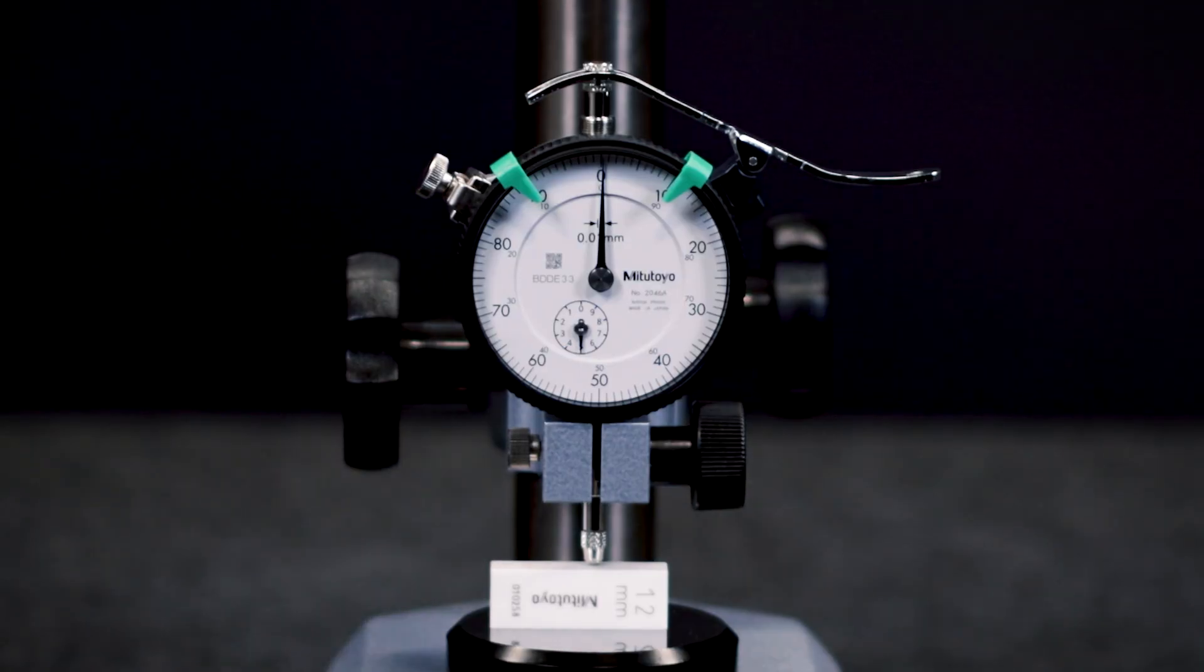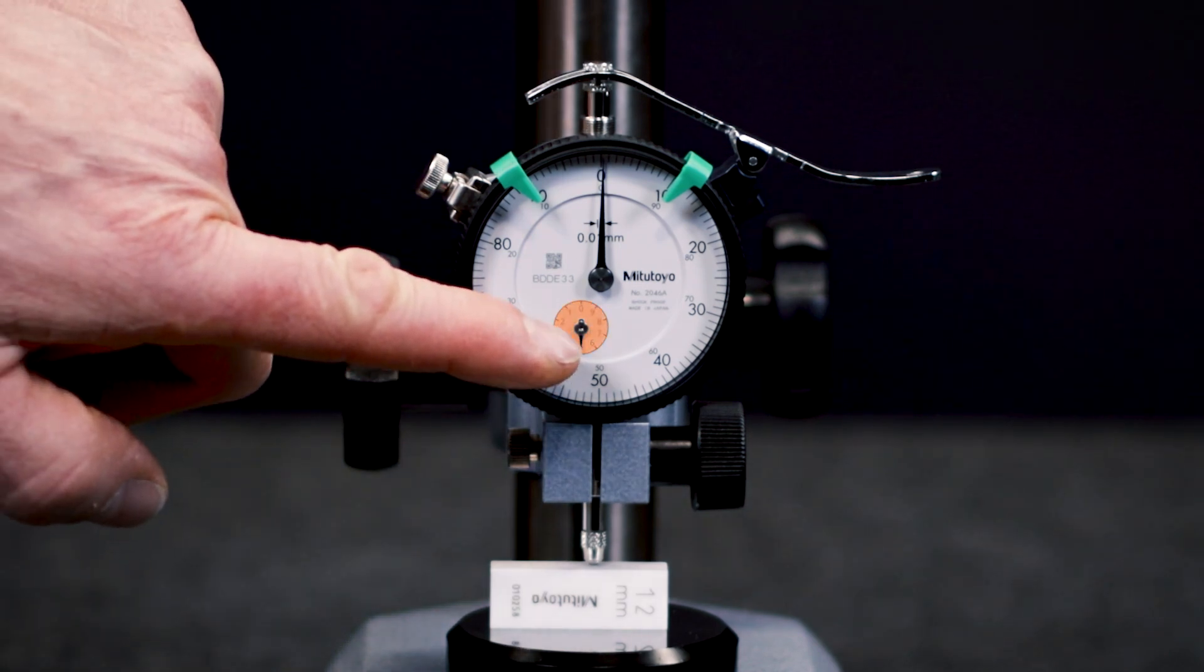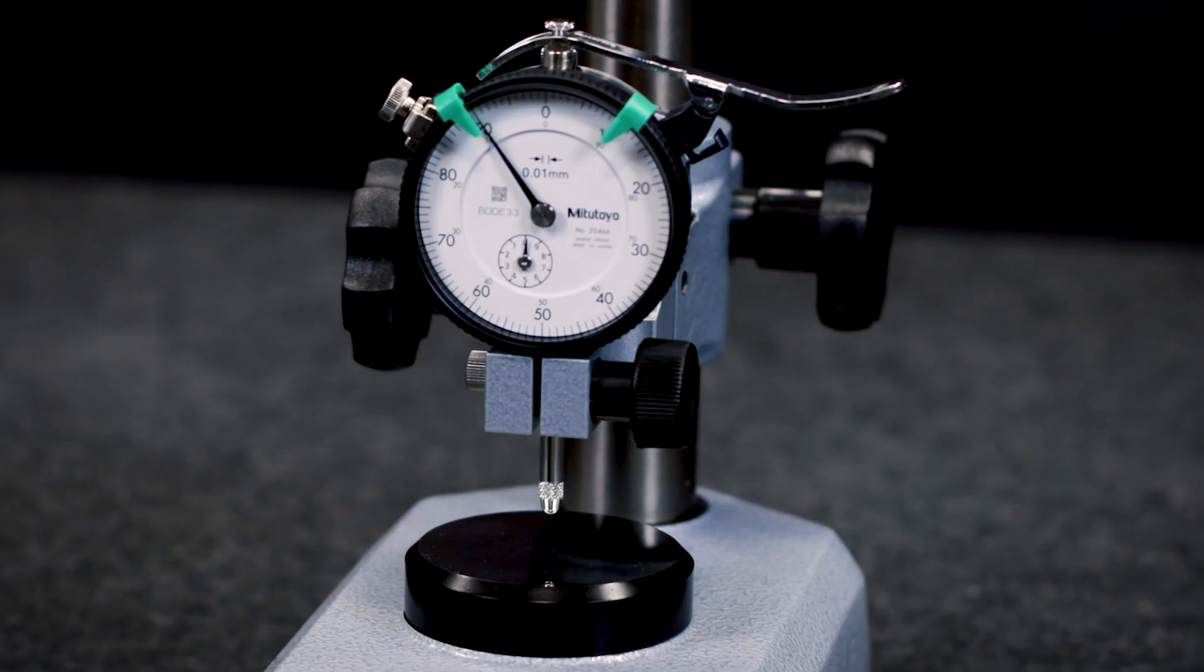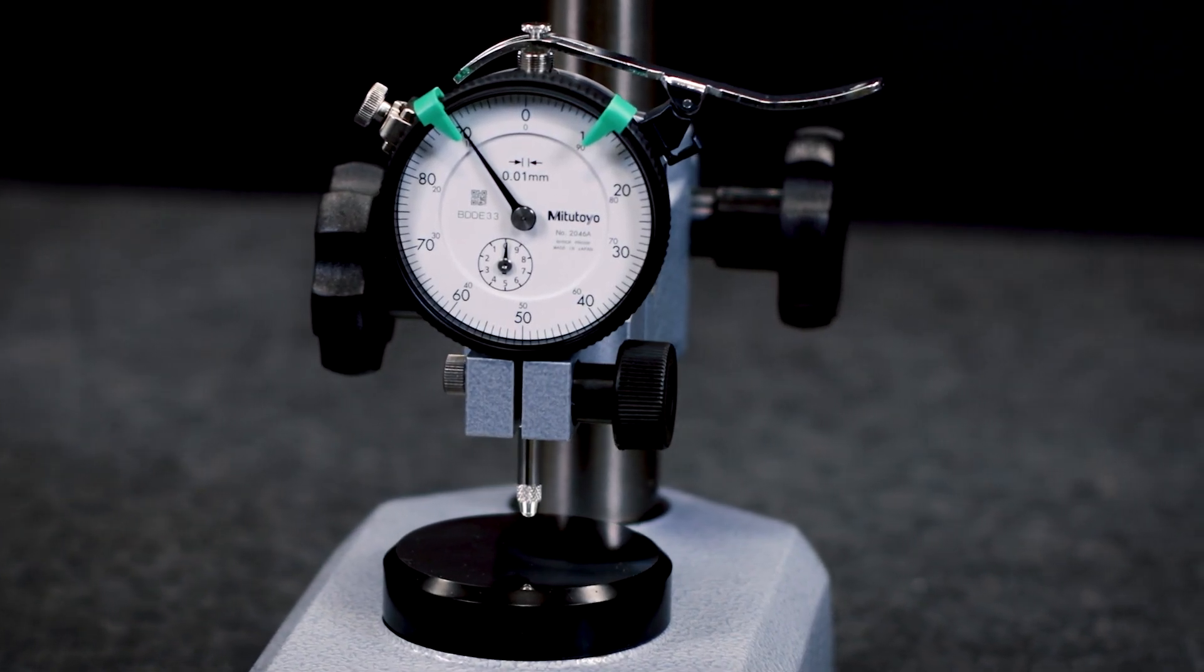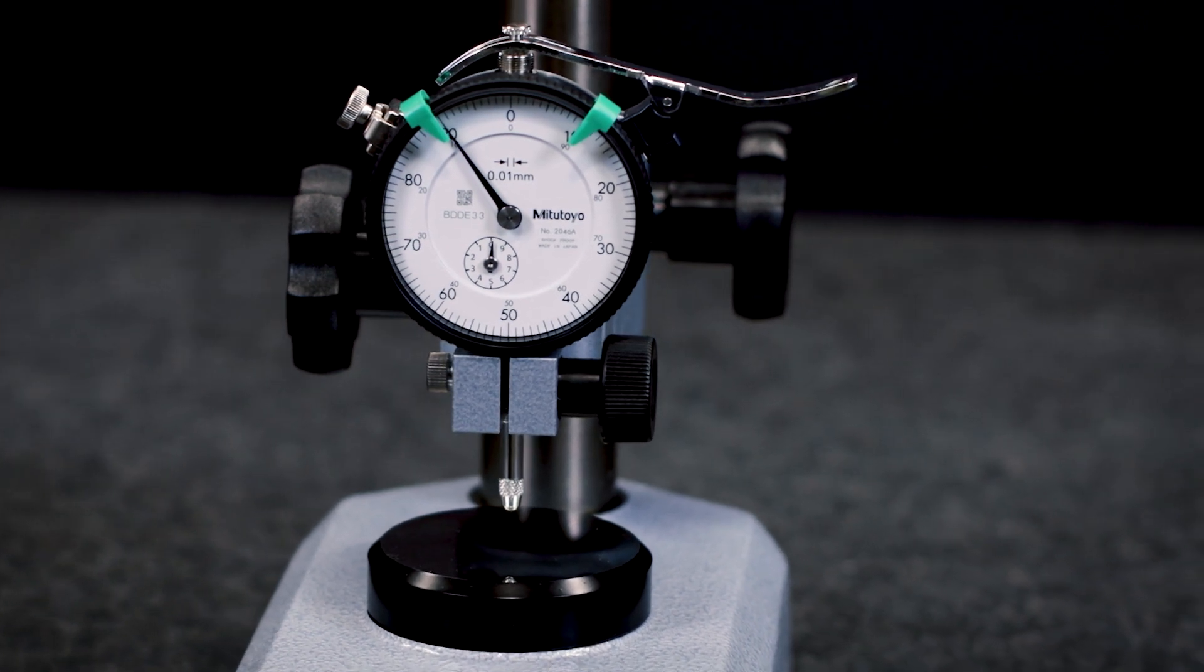This is the long pointer. The short pointer has a scale interval of 1 mm. This is the short pointer which is the revolution counter. This type is commonly used in various applications and is very popular as a standard product.